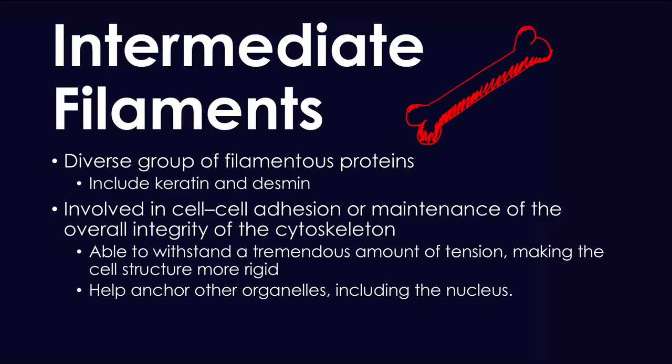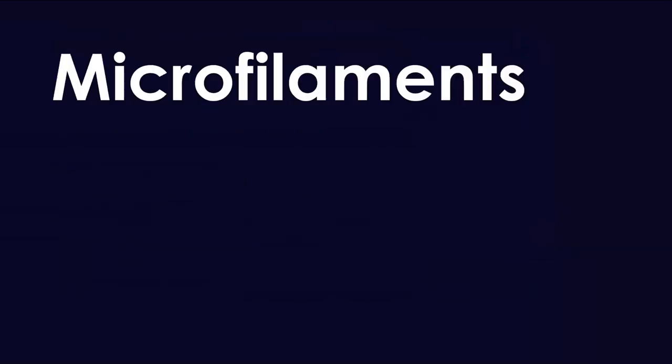Intermediate filaments are able to withstand a tremendous amount of tension, making the cell structure more rigid, just like our long bones, and they help anchor organelles in their place, including the nucleus. This is very important because if intermediate filaments don't function properly, your organelles might not be in the right position, and if they release their internal substances, they can cause harm to neighboring organelles, which is very dangerous.